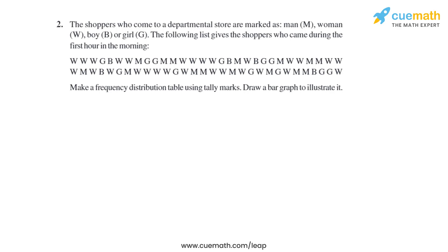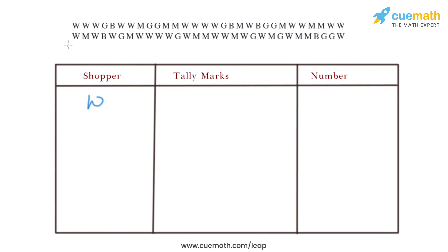Let's start with W and count how many there are: 1, 2, 3, 4, 5, 6, 7, 8, 9, 10, 11, 12, 13, 14, 15, 16, 17, 18, 19, 20, 21, 22, 23, 24, 25, 26, 27, and one more — that is 28. So the number of women is 28.